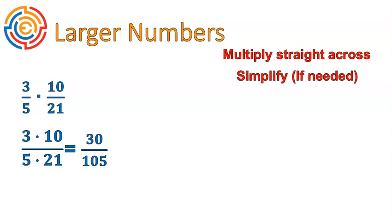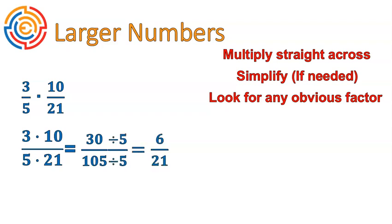When we're asked to simplify now, instead of listing all the factors of 105 and 30, those are big numbers. Instead, I'm going to look for any obvious factors. I know that these numbers end in a 0 and a 5. So I know 5 is a factor of both 30 and 105. It's probably not the greatest common factor, but it is a common factor. So I can divide both the top and bottom by 5, and that simplifies the fraction. It is not in lowest terms yet, but I've made it easier and gotten rid of those big numbers, which is what I was trying to do.